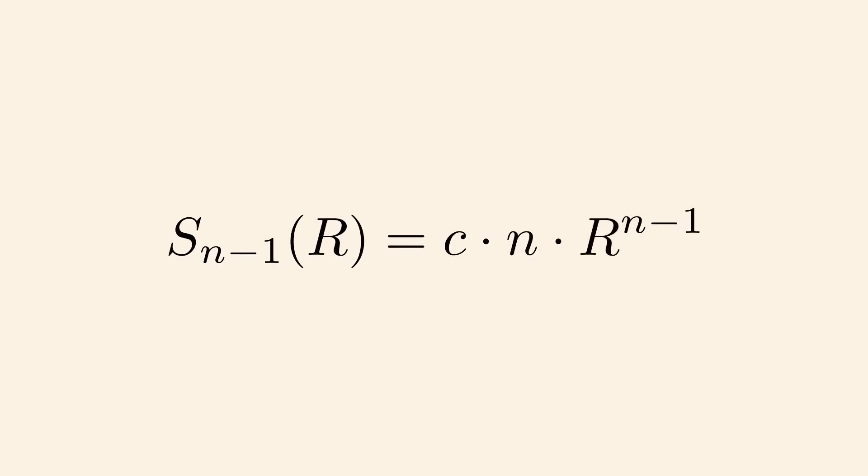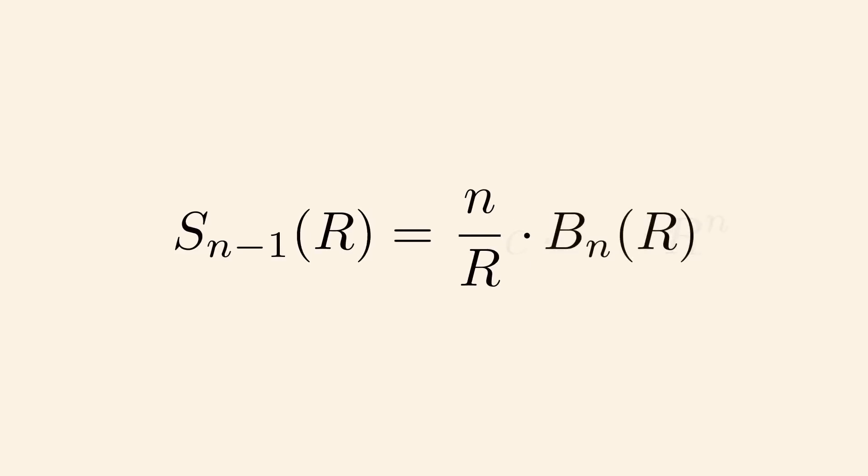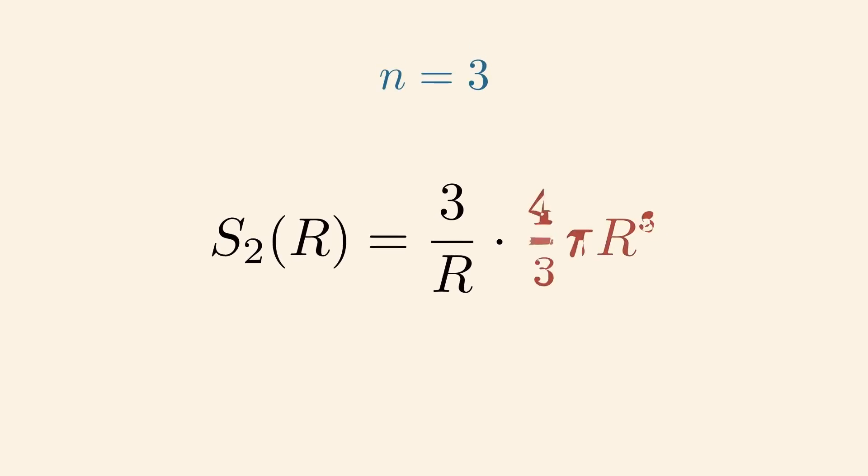If we have some constant times r to the n and differentiate with respect to r, we get a formula on how Sn-1 depends on Bn. Let's see if we can verify this formula. The volume of the 3-ball is 4 thirds π r cubed. So, the surface area of its boundary, the two-sphere, must be 4π r squared, and indeed it is.